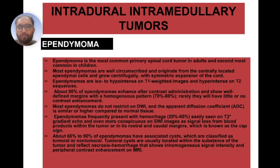Intradural intramedullary tumor: Ependymoma. Ependymoma is the most common primary spinal cord tumor in adults and second most common in children. Most ependymomas are well circumscribed and originate from the centrally located ependymal cells and grow centrally with symmetric expansion in the cord.